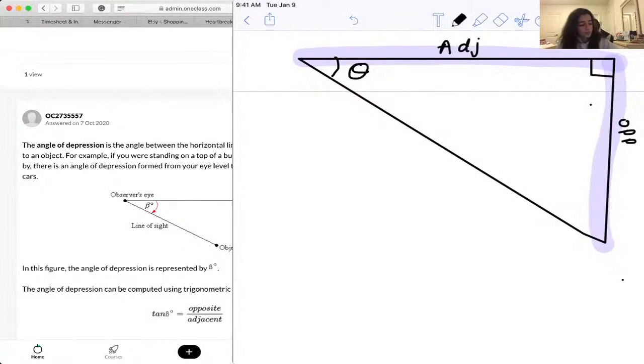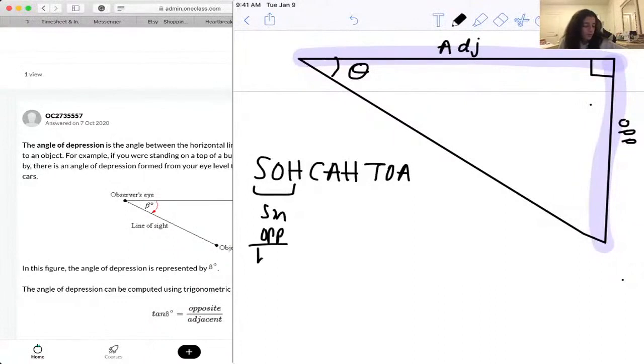And to solve for those, we would just use SOHCAHTOA. SOHCAHTOA, if you guys don't know, this is sine opposite over hypotenuse.